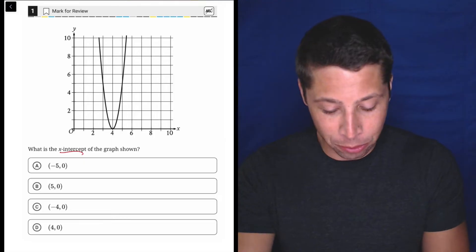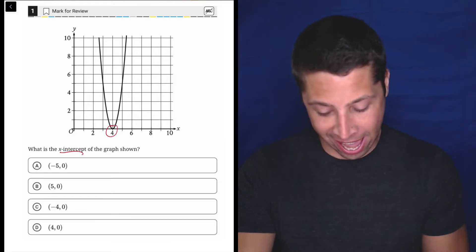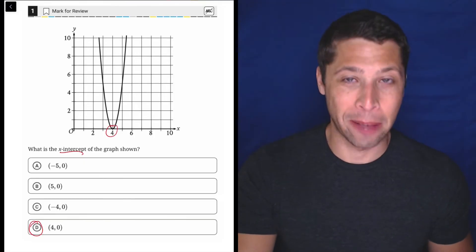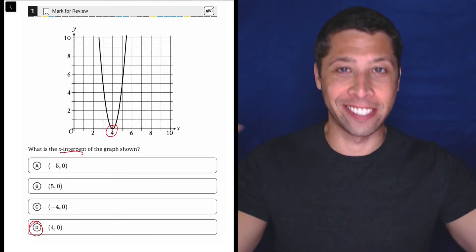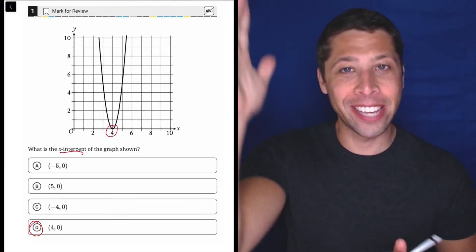There's really no way to confuse it with anything else, it is right here, and 4, 0 is that point. The x-coordinate comes first, that's this way, and the y-coordinate comes second, that's this way.